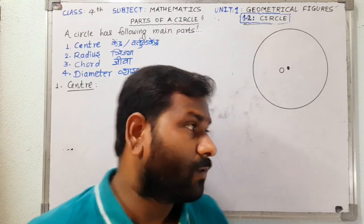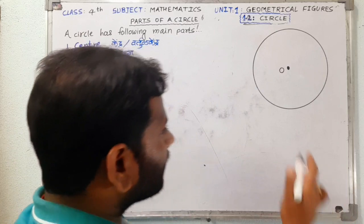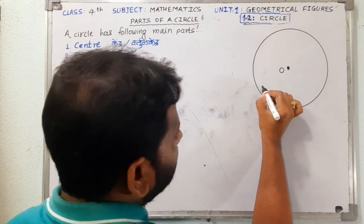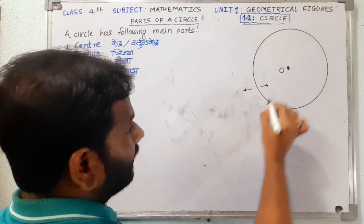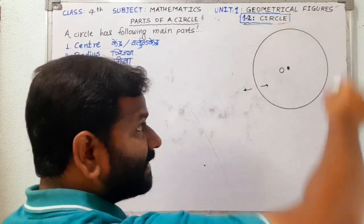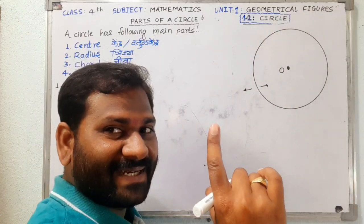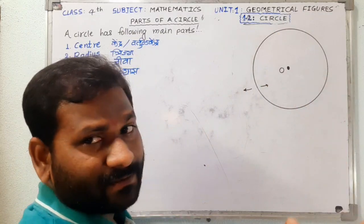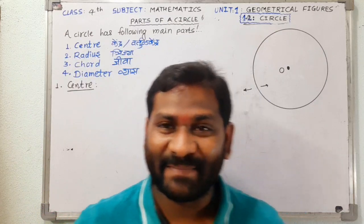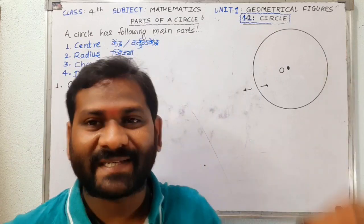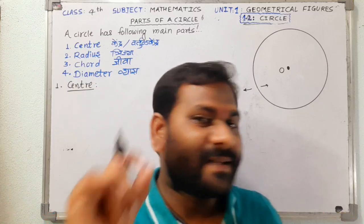A circle makes three parts of a plane: the first part is the inner part, one is the outer part, and the third part is itself the circle, or the circumference. The curve of a circle is the circumference.